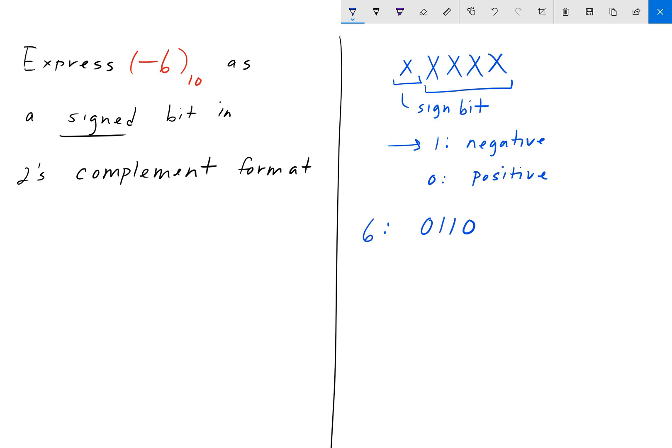And we want to take the two's complement. So, in order to get the two's complement, we first have to take the one's complement. And the one's complement is simply just these bits inverted. So, 1's complement is just the inverse of this 6. So, instead of 0, 1, 1, 0, it's going to be 1, 0, 0, 1.